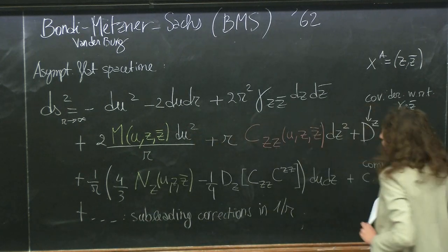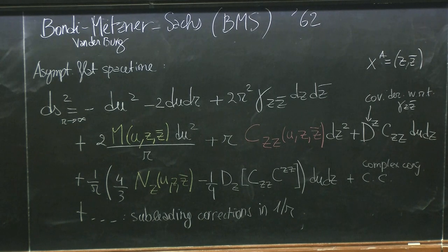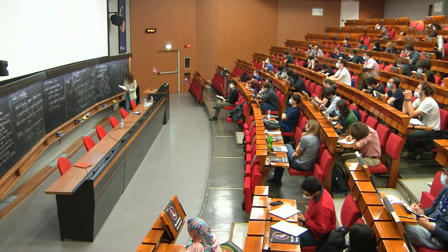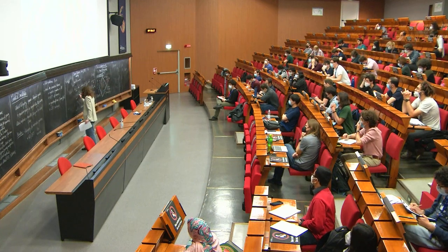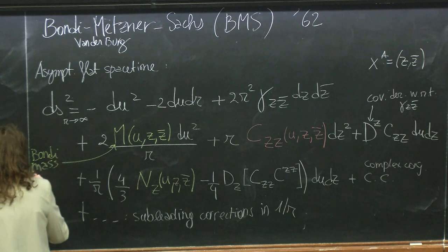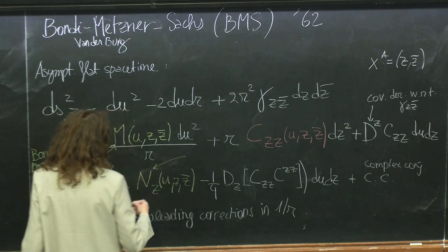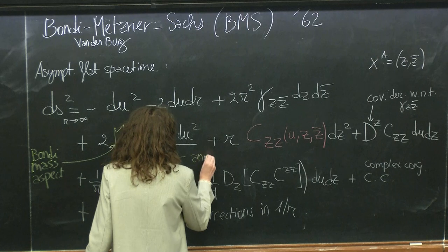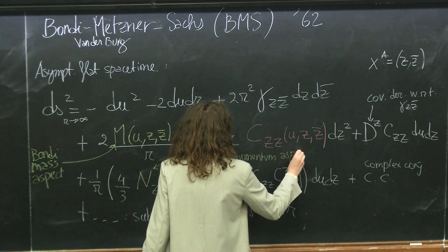We have a few terms here — remarkably not so many. This function M is called the Bondi mass aspect, and N_Z (with also an N_{Z̄}) is called the angular momentum aspect.